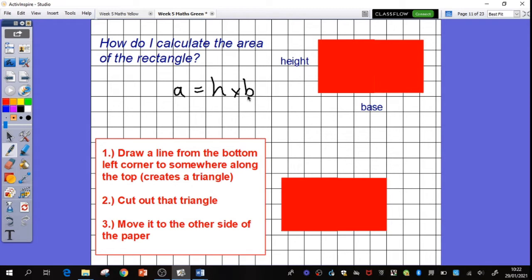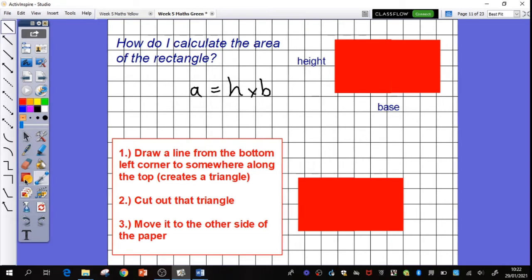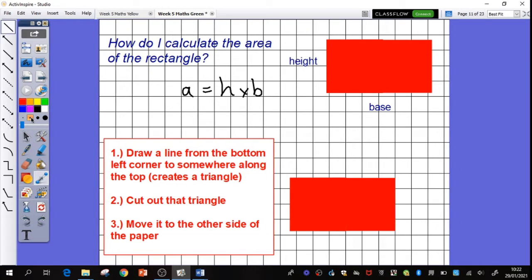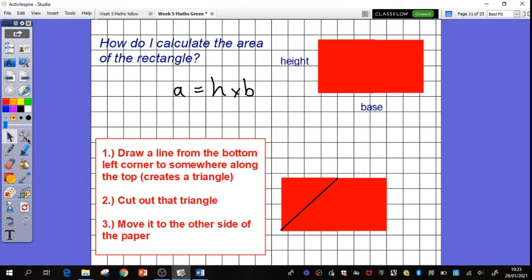Draw a line from the bottom left corner to somewhere along the top of your rectangle. Let me just get my line tool a little bit thicker than that. Okay, let's go from bottom left up to somewhere along there. From the bottom left corner to somewhere along the top.